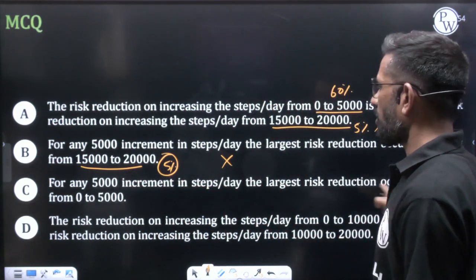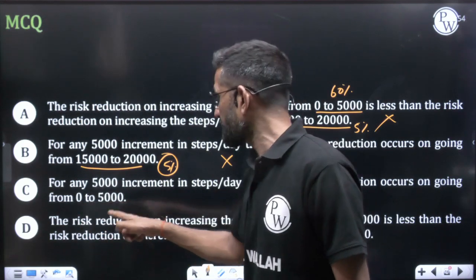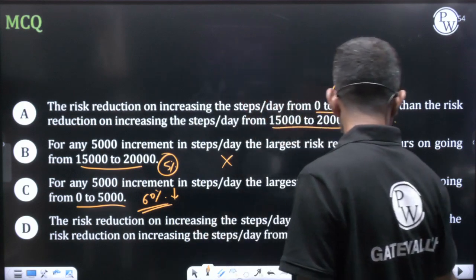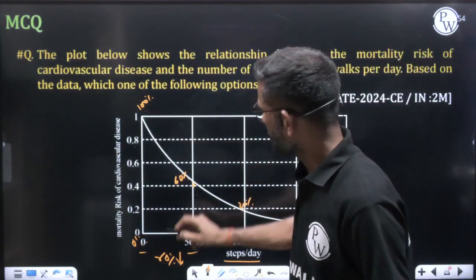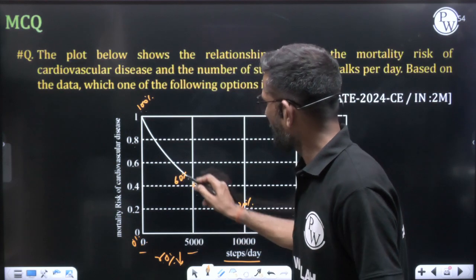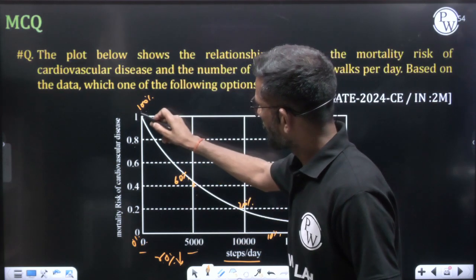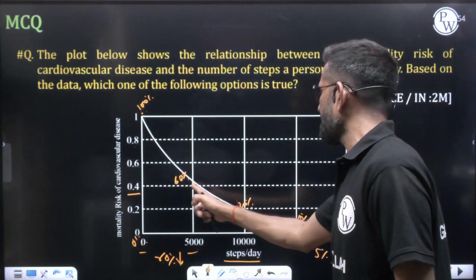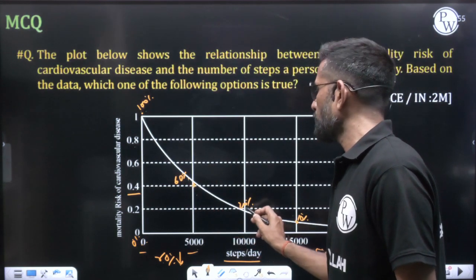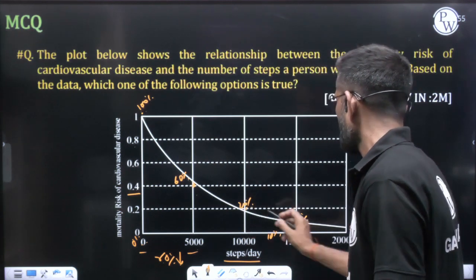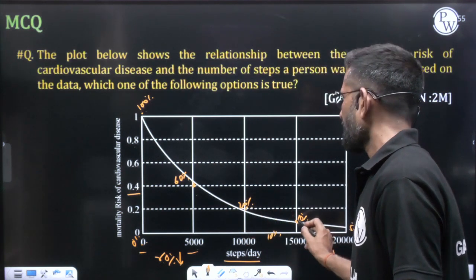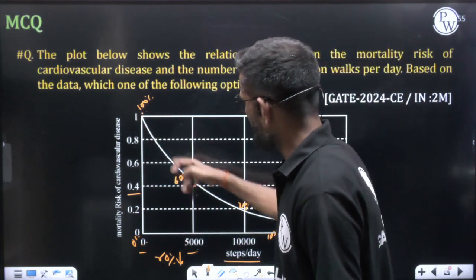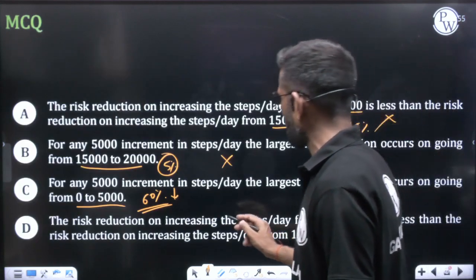Option C states that for any 5,000-step increment, the largest risk reduction occurs going from 0 to 5,000. From 0 to 5,000 there is a 60% reduction (from 100% to 40%). The remaining intervals decrease progressively: 40% to 20% (20% reduction), 20% to 10% (10% reduction), and 10% to 5% (5% reduction). The largest reduction is clearly at 0 to 5,000, so Option C is correct.